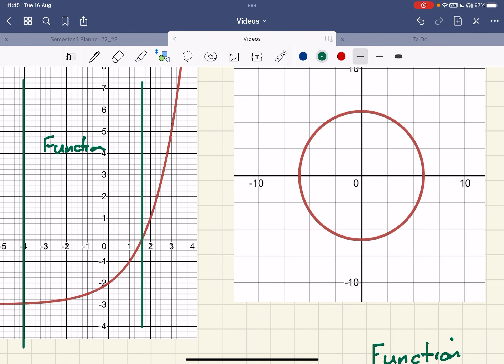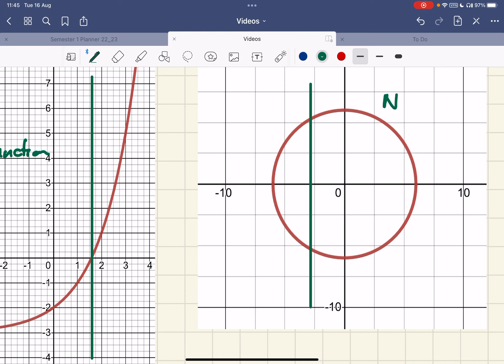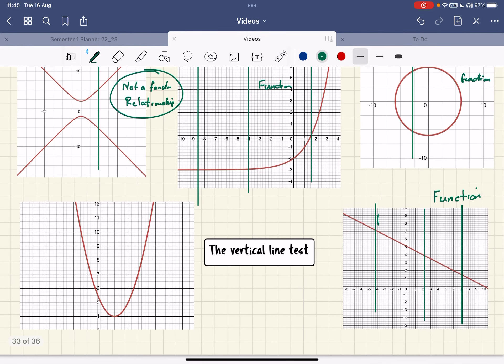So look at this one here, the circle - again, just take a straight line, put it anywhere, a vertical line, put it anywhere, it goes through twice. So this is not a function. This is as easy as this if you have a graph to decide whether something is a function or not.